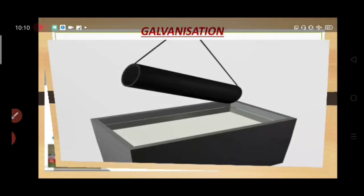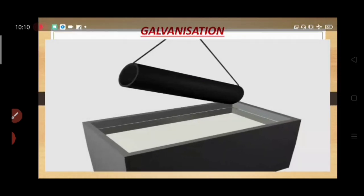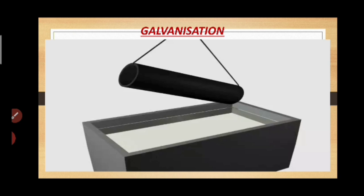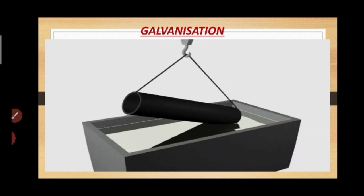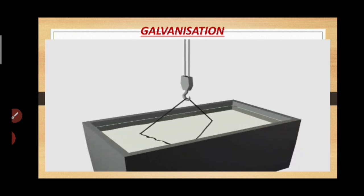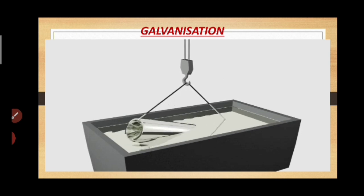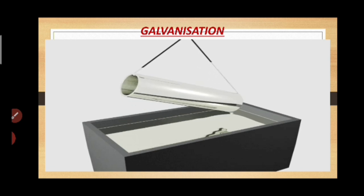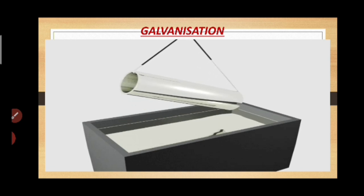Now let's see the method of galvanization. In this, the steel plate is covered with a layer of zinc. This is galvanization and it helps to prevent corrosion of metals.